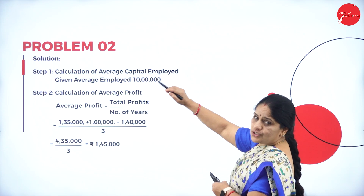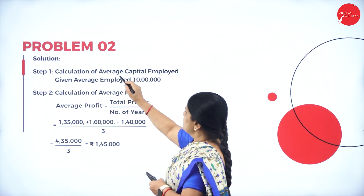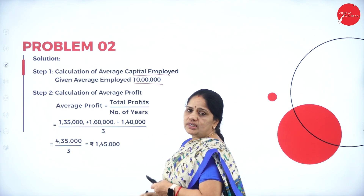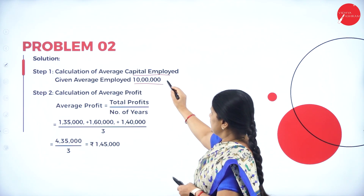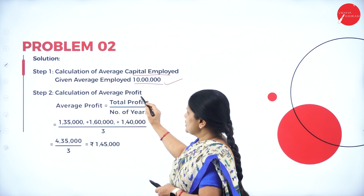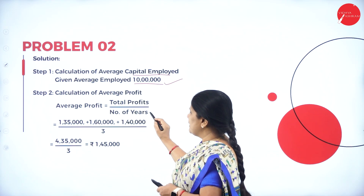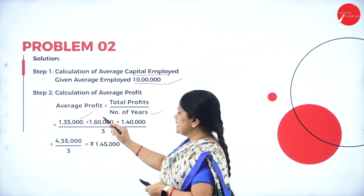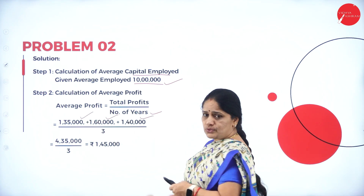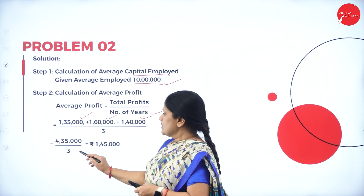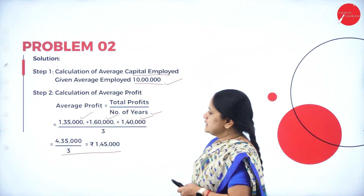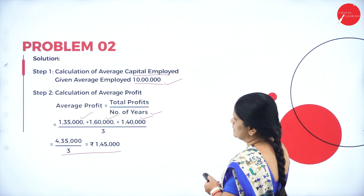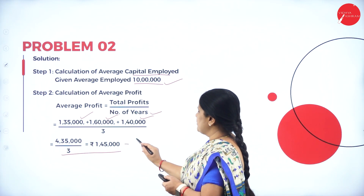Solution to problem two: Calculation of average capital employed — the given capital is taken as the average capital, which is 10 lakhs. Calculation of average profit: total profit is 1 lakh 35,000 plus 1 lakh 60,000 plus 1 lakh 40,000, coming to 4 lakh 35,000, divided by 3 equals 1 lakh 45,000.